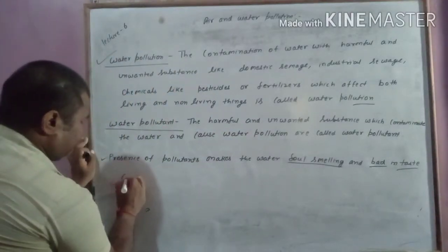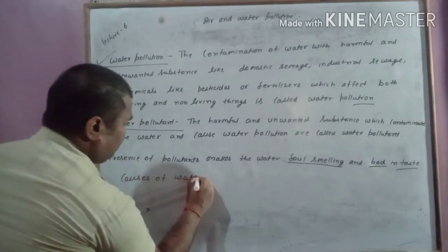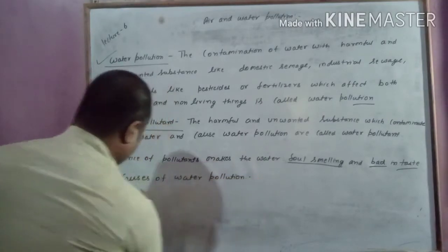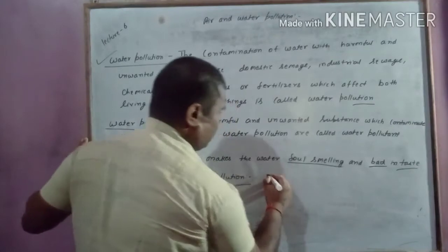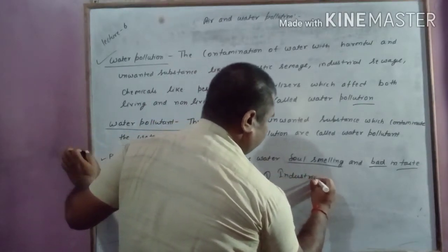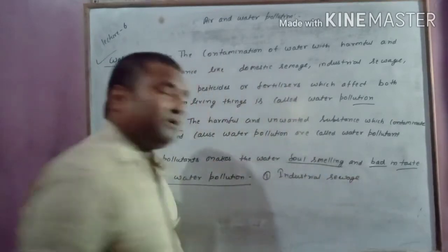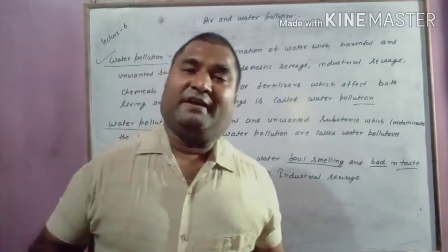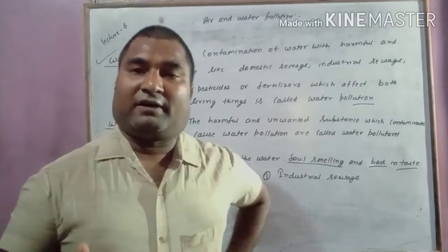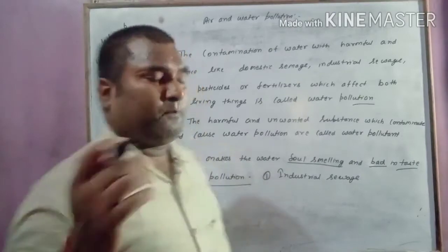Causes of water pollution: First is industrial sewage. The waste that is coming from the industry without treating is a cause of water pollution. It contains toxic chemicals; if it is added into the water, the water gets polluted.